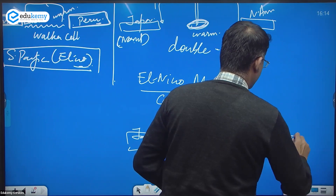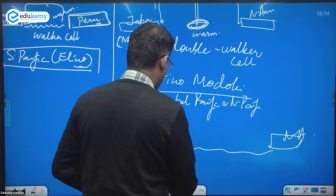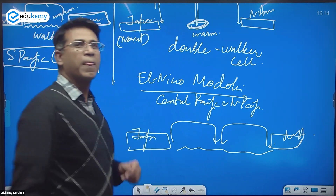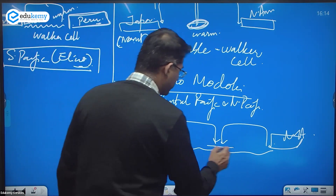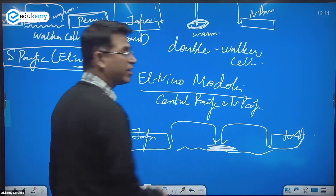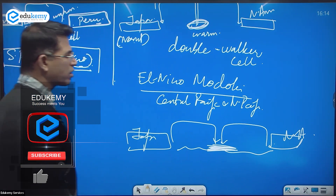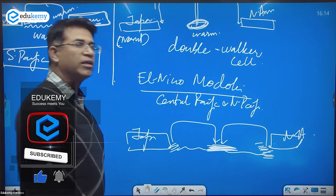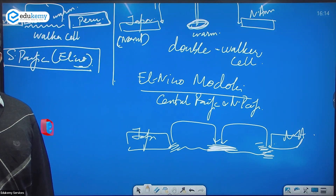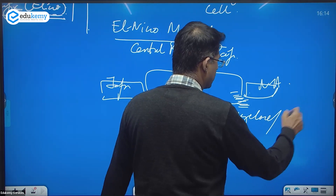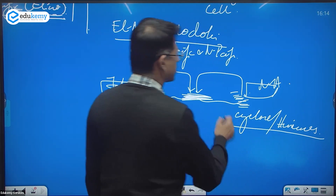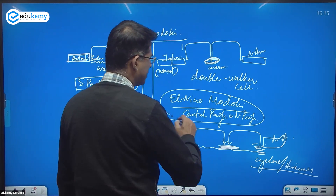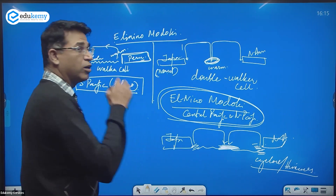So with Japan on one side and North America on the other, the impact is felt in the central Pacific. When this central water warms up, it can result in cyclones or hurricanes near North America. So El Niño Modoki is a phenomenon of the central Pacific and north Pacific.